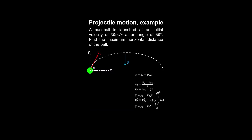A baseball is launched at an initial velocity of 30 meters per second at an angle of 60 degrees from the horizontal axis. We are asked to find the maximum horizontal distance of the ball, or the range.